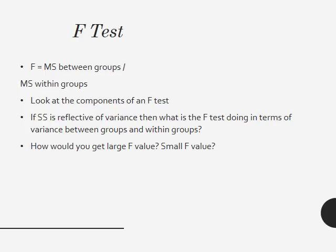Hopefully this is helpful. Remember that sums of squares is reflective of variance — that's what's happening within group and between group. The key takeaway is that ratio issue of between group and within group, and that it's dealing with variance — the spread of the bell curve.